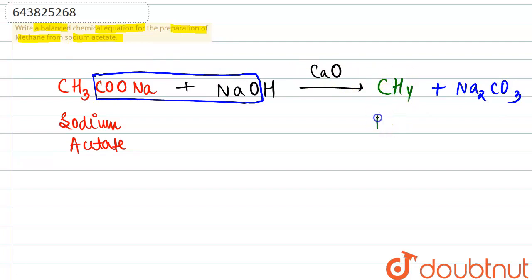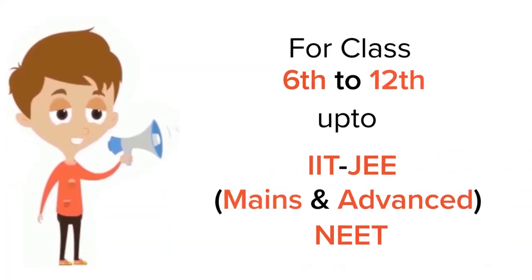The CH₃ and one hydrogen combine to form methane. This is how sodium acetate can be converted into methane.